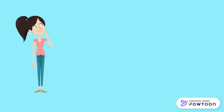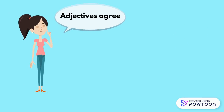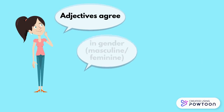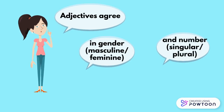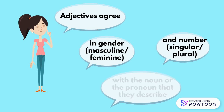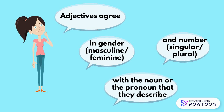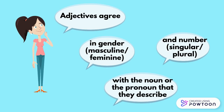In French, adjectives agree in gender — masculine, feminine — and number — singular, plural — with the noun or pronoun that they describe.